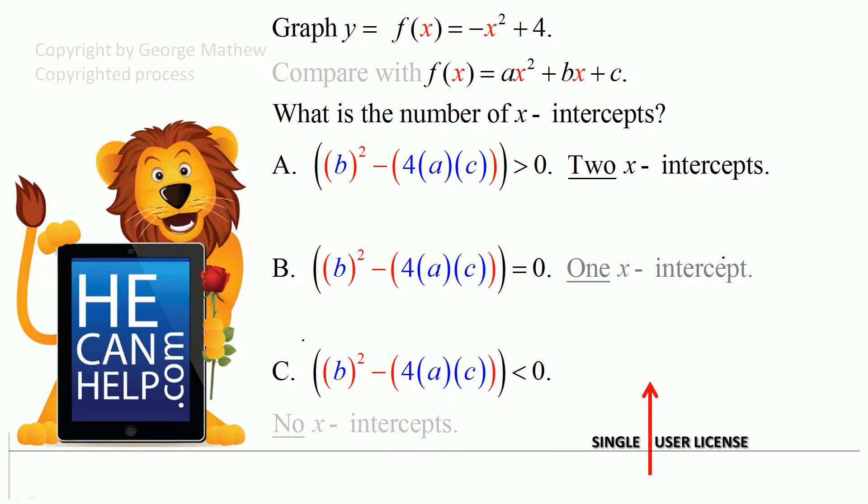When we compare negative x squared plus 4 with ax squared plus bx plus c, we see that a equals negative 1, b is equal to 0 because there is no x term, and what is c? c is positive 4.